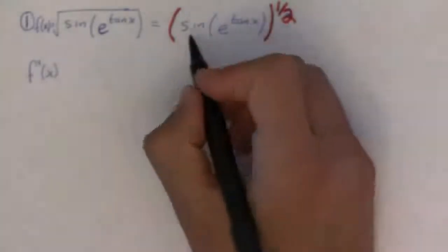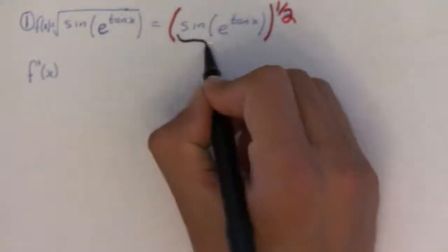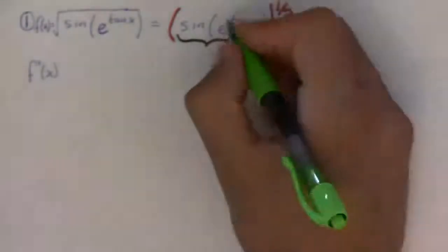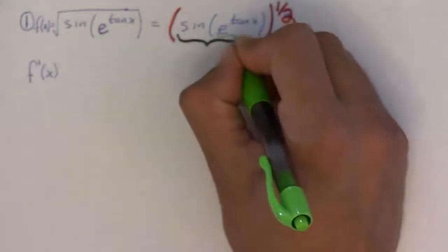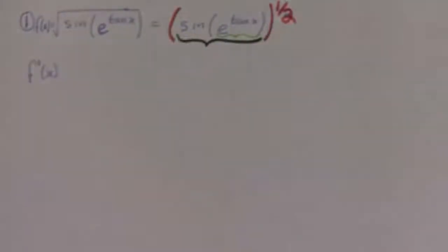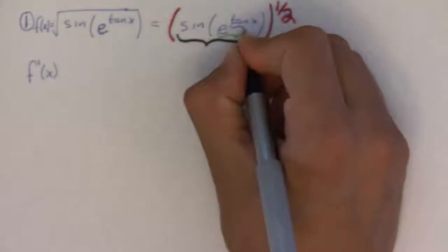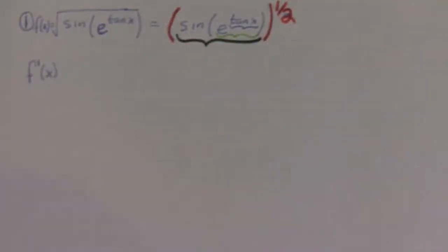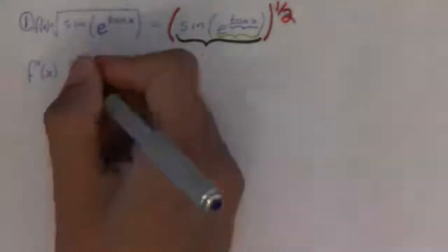The most outside function is this guy being raised to the 1 half. Okay, and then inside of that, there's another function, the sine function. Inside of that function, there is the natural exponential function. And inside of that one is the tangent function. So, this is 1, 2, 3, 4 levels of chain rule madness.